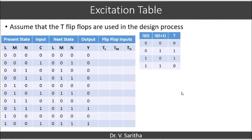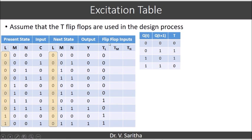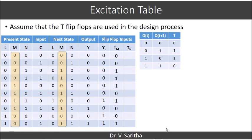From the state table, we are going to get the excitation table. We have replicated the same here. We are assuming T flip-flops will be used in the design process. This is the excitation table for the T flip-flop. Now let us consider L from the present state and the next state in order to get TL. When both present state and next state are the same, TL will be 0. If both are complement to each other, TL will become 1. Similarly, we will get TM and TN also.